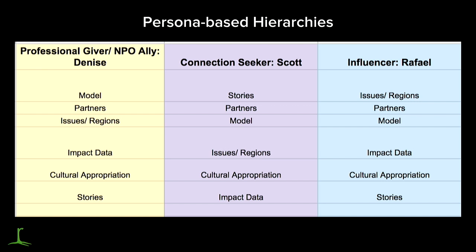How does this move into creating a website hierarchy? Across the top we have our three personas, ranked in terms of who was most important to the organization. Even though everyone was very close in value, you have to pick somebody because ultimately you need to direct your hierarchy appropriately. Following with our professional giver: most important to her was the model, then partners, then the issues and regions, then impact data, and stories. By taking the main areas of what was most motivating to those personas, we're able to create a really clear hierarchy — not just of the homepage, but the workflows throughout the site to get each persona to the conversion point.